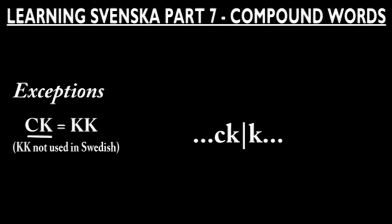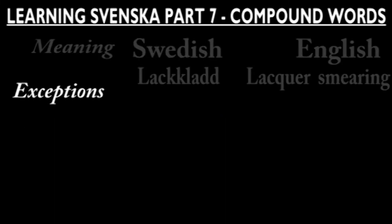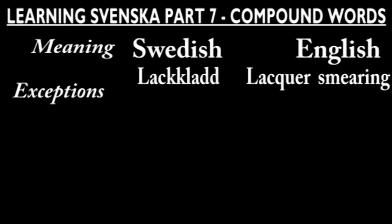I mentioned before that CK is what we Swedes use instead of a double K. But what if a compound word is composed by two words where the first one ends with CK and the second starts with K? Do you remove a K or what do you do? You actually do nothing which can be seen in the Swedish word Lackklad.